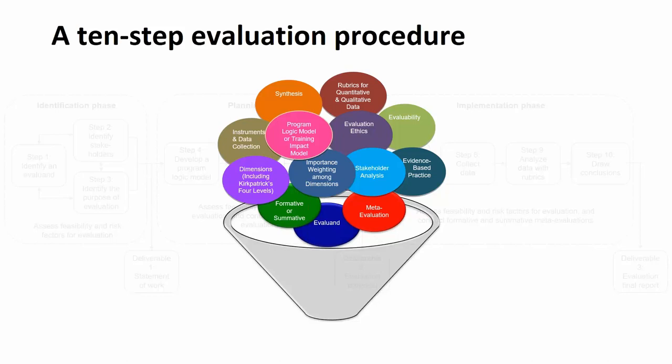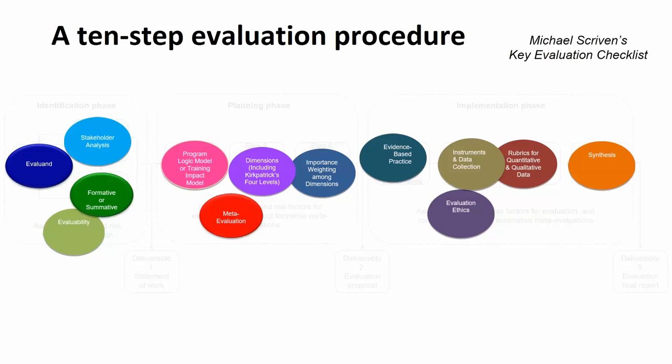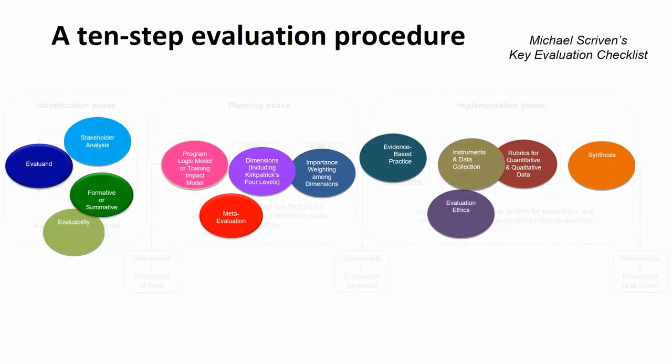I started putting all of these elements into logical order — whether each element should go up front, in the middle, or at the end. I must give credit to evaluation guru Michael Scriven and his Key Evaluation Checklist, because while I was doing this work, I used his checklist a lot. His checklist is not exactly like this, but it was very helpful. That's how I developed this 10-step evaluation procedure, and it works for evaluating any type of program — training or non-training.